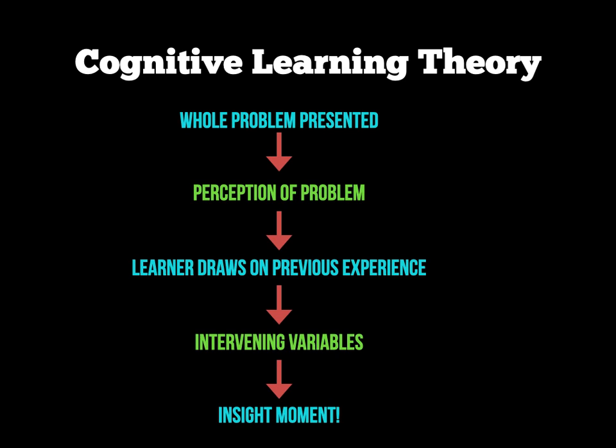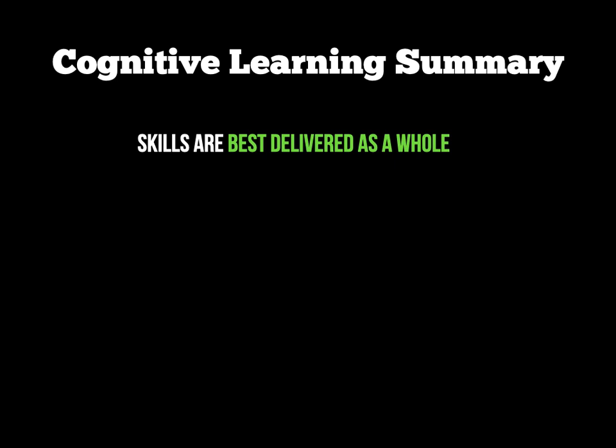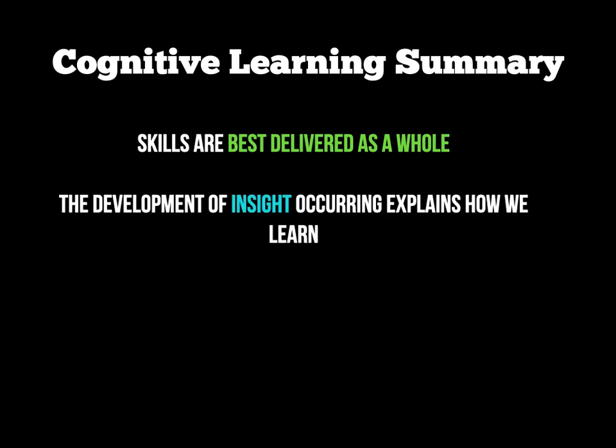That is a good example of cognitive learning theory — not necessarily a sporting example for exams, but it illustrates how the learning works. For your revision summary: skills are delivered as a whole, for example, can you swim to the other side of the pool using three different strokes, or can a basketball team score five points in 15 minutes against a high-ability team? The development of insight explains how we learn — that moment where you work out what needs to be done gets cemented in memory, so we learn and remember the process. Most people who haven't ridden a bike for years can still get on one and know what to do.